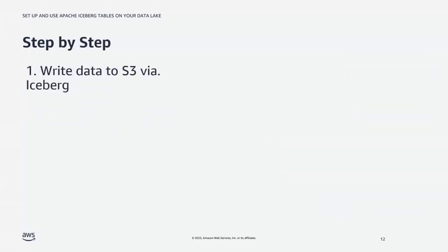I know it can be complicated when first looking at the different layers behind Iceberg, especially with multiple levels of metadata. I put together an animation to help make clear how these layers work together. Let's look at an example where the first thing we're doing is writing data to S3 via Iceberg — using maybe an AWS service that supports Iceberg, doing the initial write of data to an S3 bucket. In writing data to an S3 bucket, we ultimately need those data files — we need to establish those Parquet files through Iceberg.